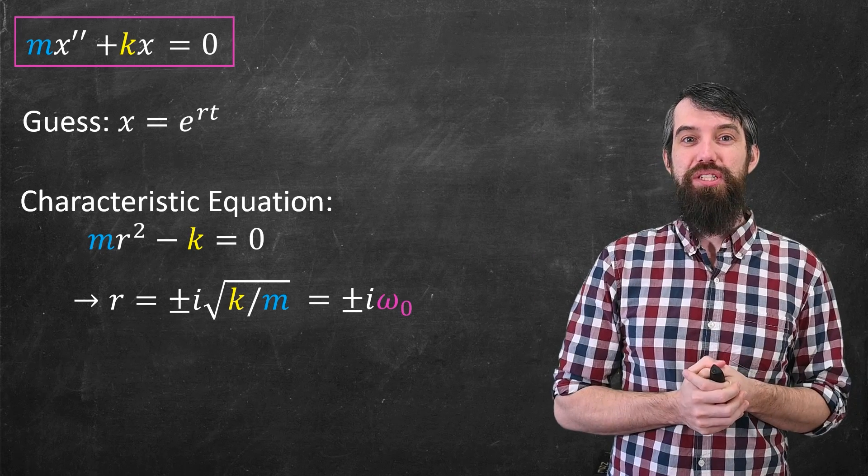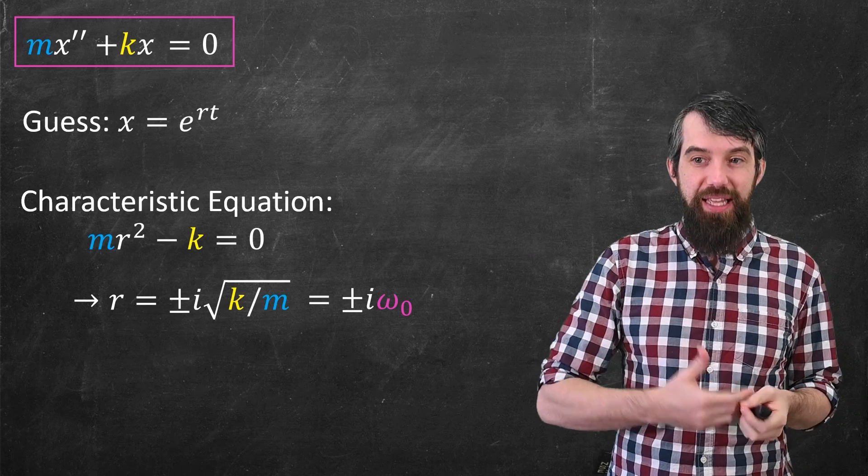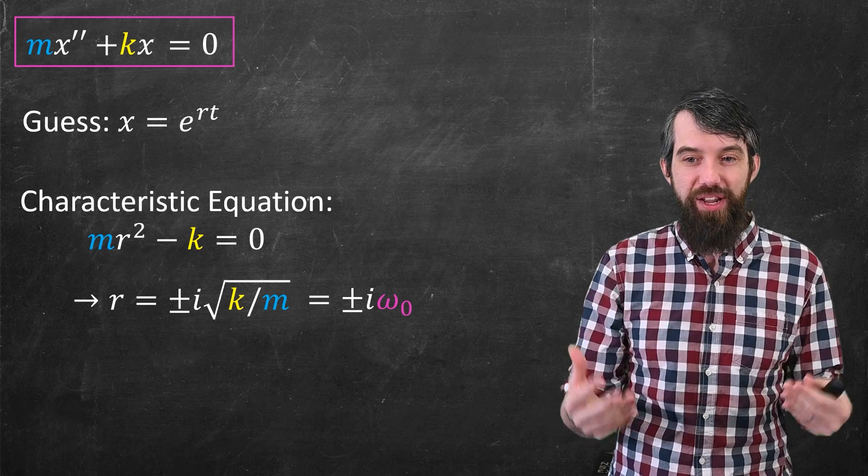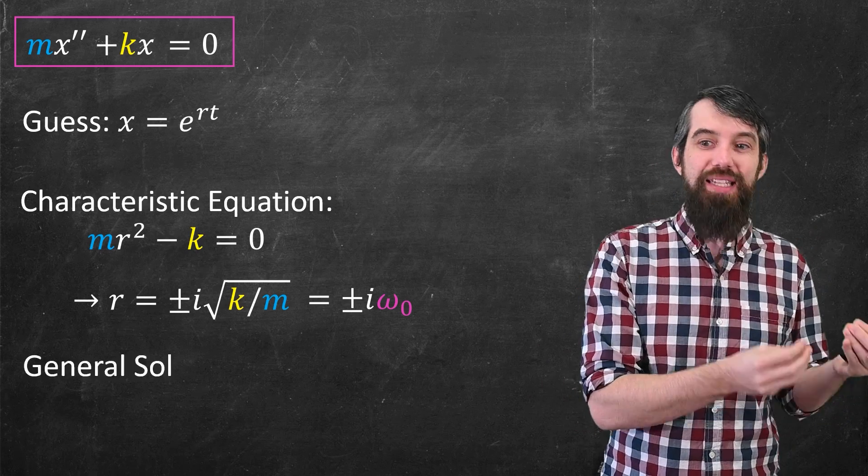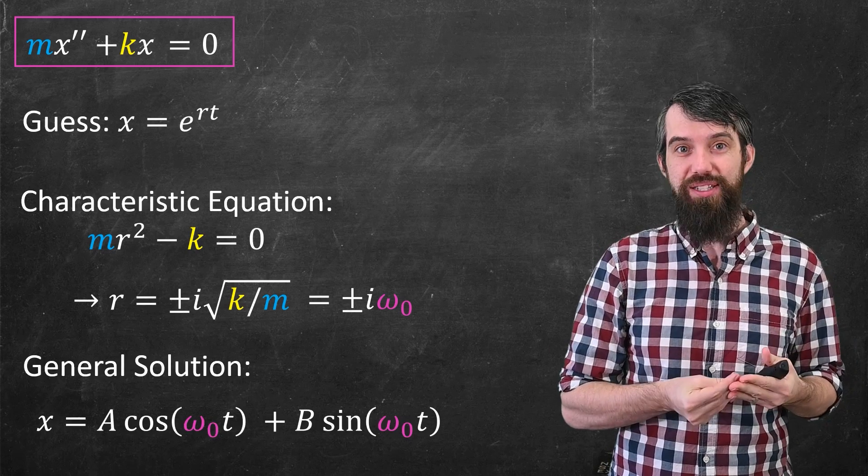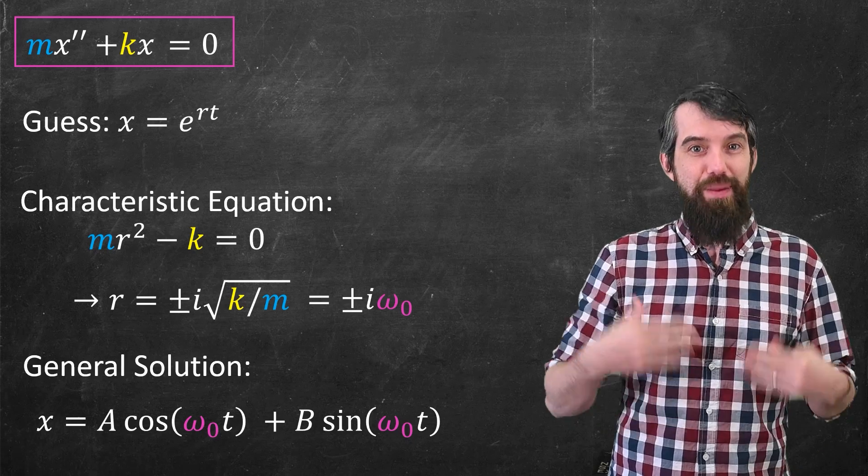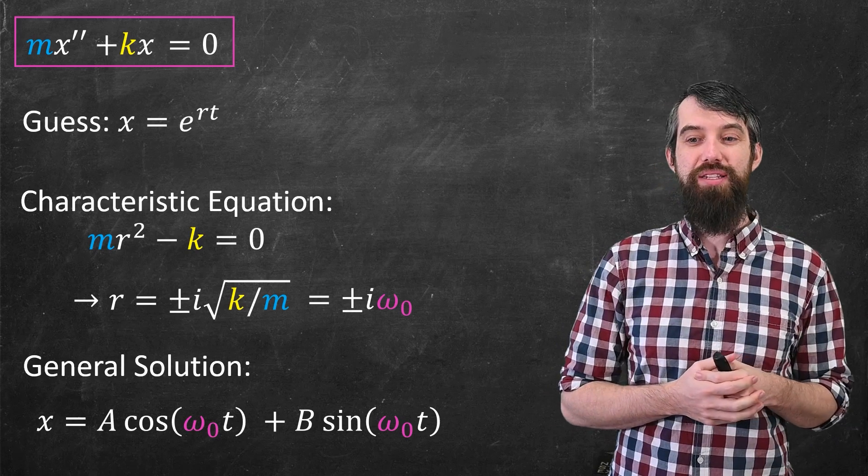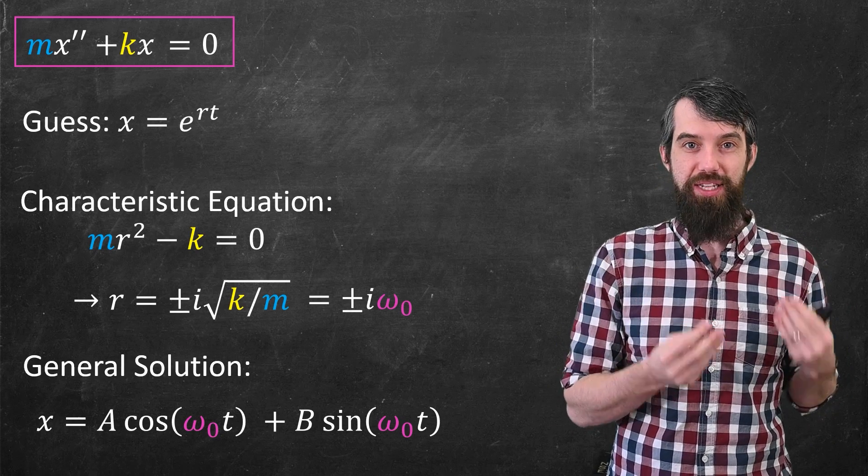Okay, so what was the next step in our process to solve a differential equation like this? Well, e^(±iω₀) we saw could be converted into sines and cosines. There's no real part to our r's, so there's no exponentials. And the imaginary part by Euler's formula gets converted to cosine and sine, so I get A cos(ω₀t) + B sin(ω₀t).